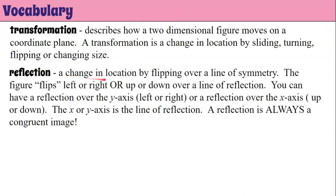A reflection is a change in location by flipping over a line of symmetry. The figure flips left or right, or up or down, over a line of reflection. You can have a reflection over the y-axis, which would be left or right, or over the x-axis, which would be up or down. The x or y-axis is the line of reflection.